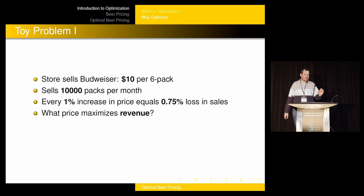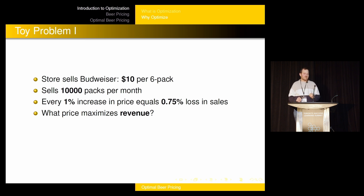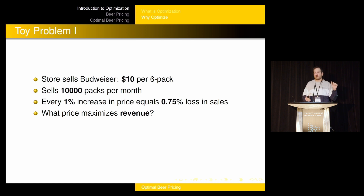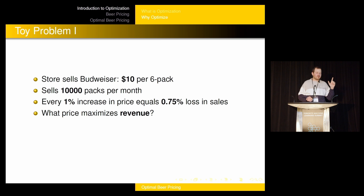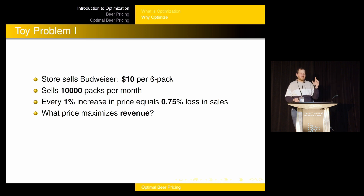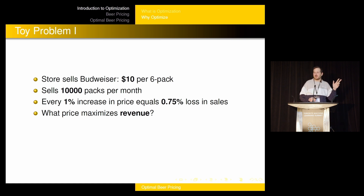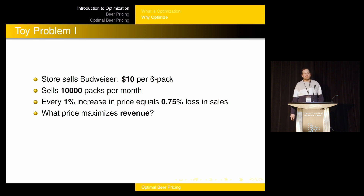So let's get into that. I love giving a toy problem in presentations — as easy as I can. This is the easiest optimal pricing problem I can think of. Imagine you have a store selling Budweiser six-packs for $10. Right now it's selling 10,000 packs of Budweiser a month. We've done some research and we know that every time we increase the price by 1%, we lose three-quarters of a percent of demand. What price should we set to maximize revenue?